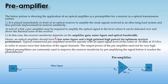The receiver sensitivity depends upon the amplifier gain, noise figure, and optical bandwidth. Hence an optical amplifier used as a preamplifier should have a low noise figure and a high gain — not high power, but high gain — for optimum receiver performance. Typical commercial pre-amplified receivers operate with an input signal level of the order of −30 dBm at 10 Gbps.